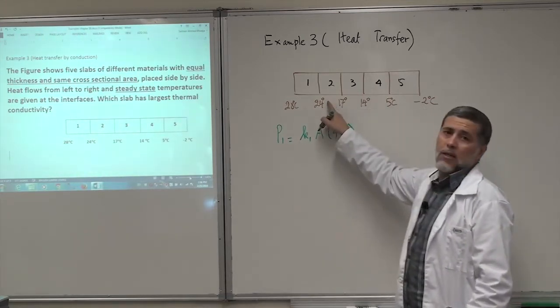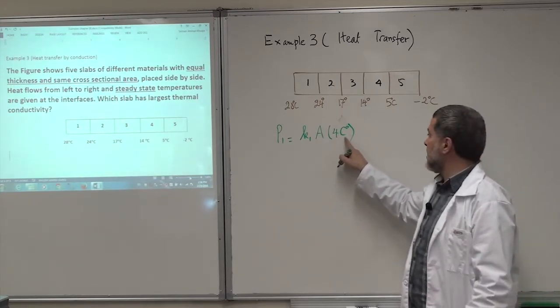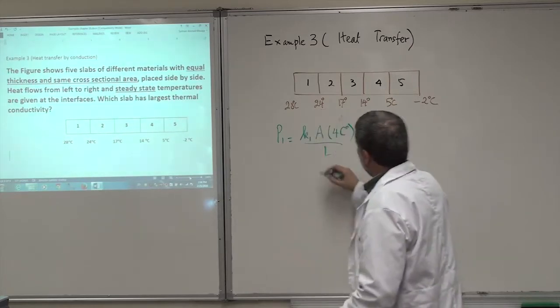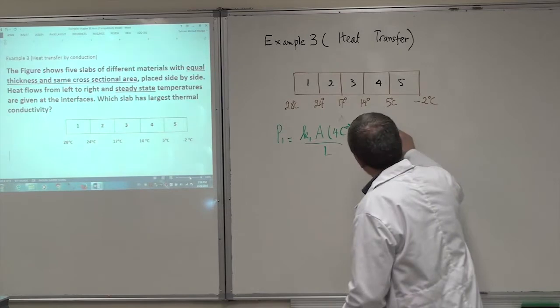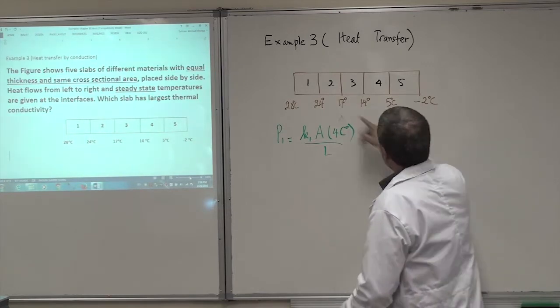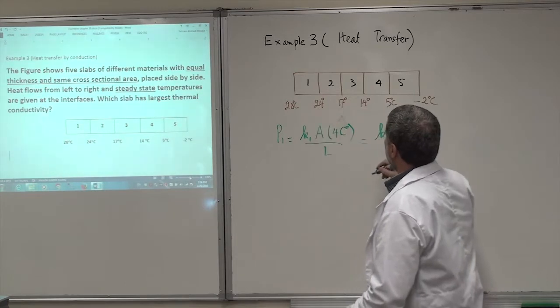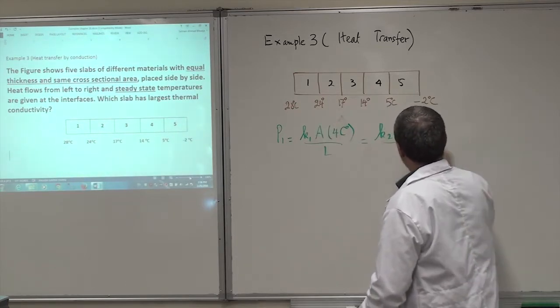Delta T will be C degree. Remember, degree C will be for temperature, and C degree will be for delta T. Over L. Equal, because we are steady state. K2, same area, delta T for these two. How much is delta T here? 3 plus 4 is 7. C degree. Over L.